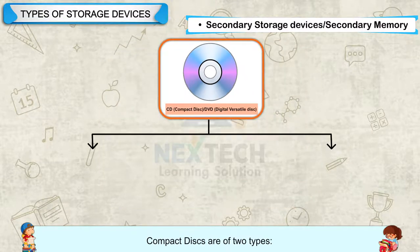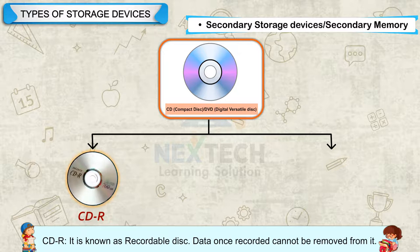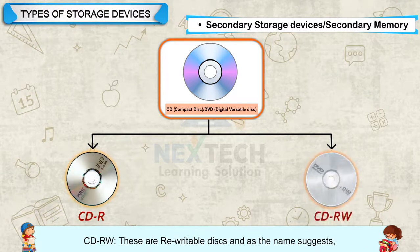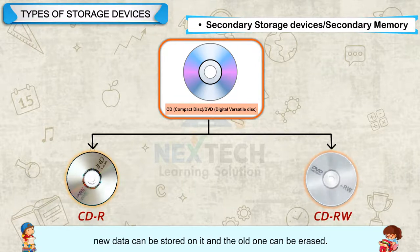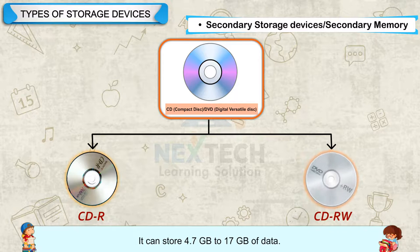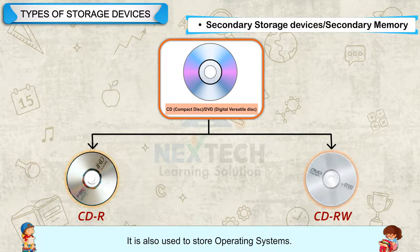Compact disks are of two types: CD-R, known as a recordable disk — data once recorded cannot be removed from it; and CD-RW, which are rewritable disks — new data can be stored on it and the old data can be erased. DVD is used to store high-capacity data like movies, videos, etc. It can store 4.7 GB to 17 GB of data, and is also used to store operating systems.